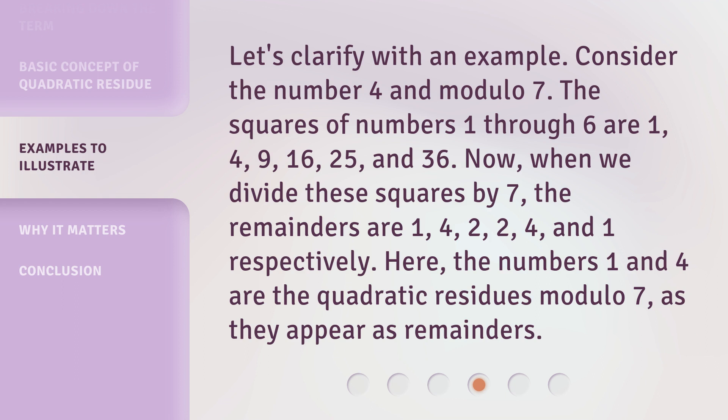Now, when we divide these squares by 7, the remainders are 1, 4, 2, 2, 4, and 1 respectively. Here, the numbers 1 and 4 are the quadratic residues modulo 7, as they appear as remainders.